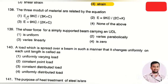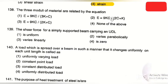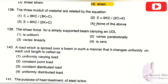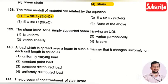The next question: the three moduli of a material are related by — option 1: E = 9KC/(3K+C), option 2: E = 9KC/(2K+1), option 3: E = 9KC/(2K+C), option 4: none of the above. The right answer is option 1, that is E = 9KC/(3K+C).